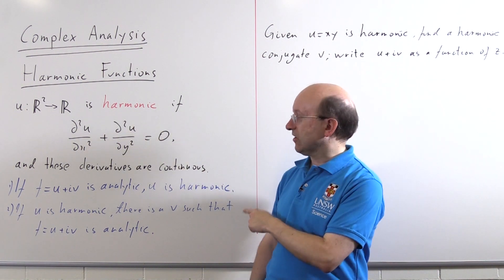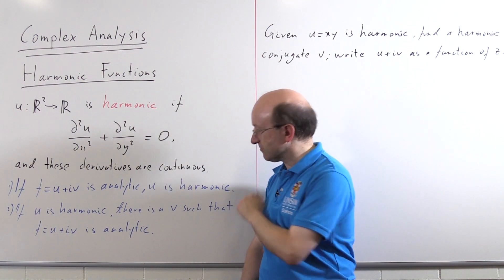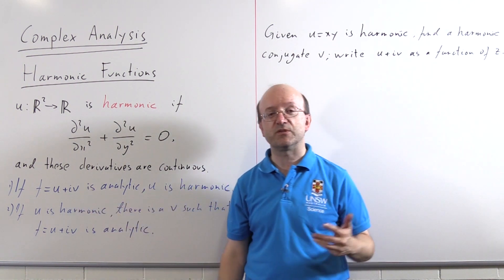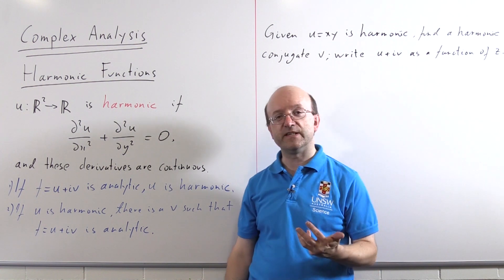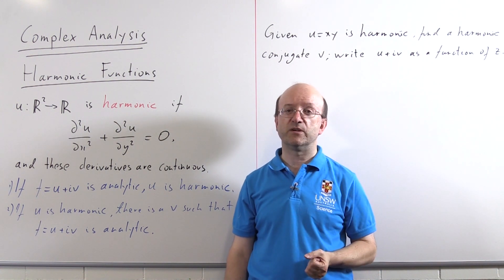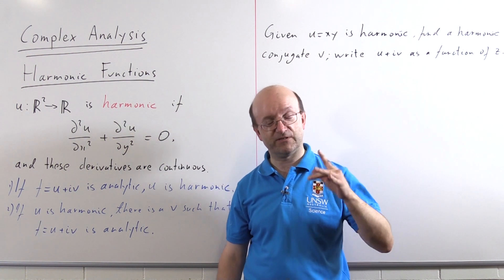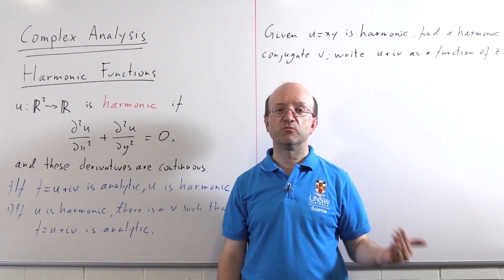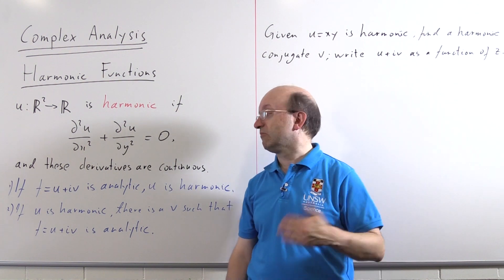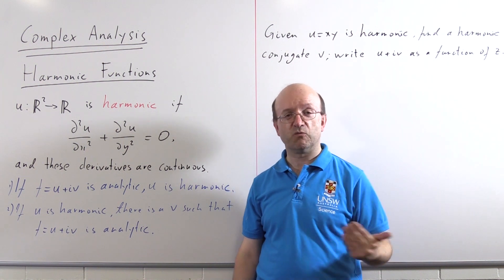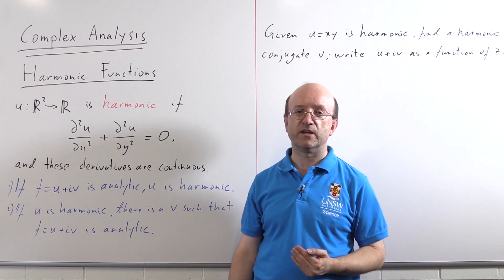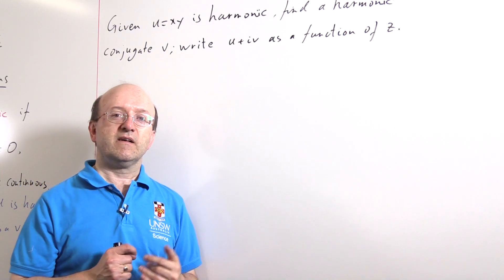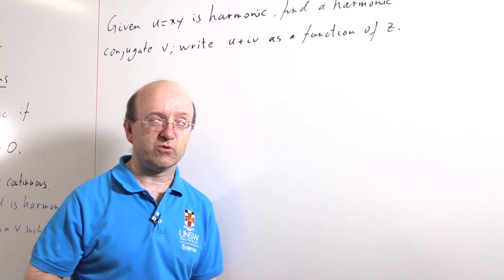Well, the clue is in the two theorems I've got written up here. If we've got u and we want u + iv to be analytic, well, that means that u and v together have to satisfy the Cauchy-Riemann equations. So those are the partial differential equations that u and v must satisfy. We know u, that gives us one side of the partial differential equations. We've just got to find v. And once we've got that, we can write down at least u + iv in terms of x's and y's. So let's write down the Cauchy-Riemann equations.